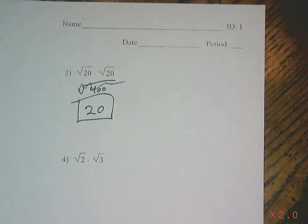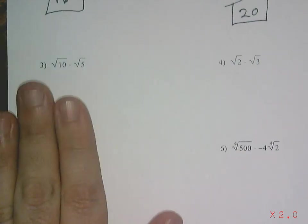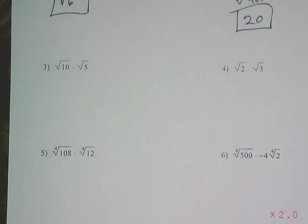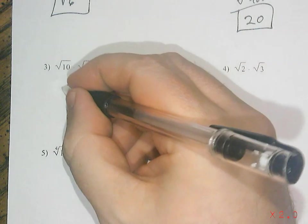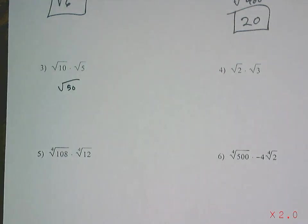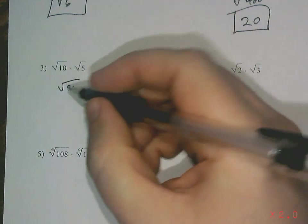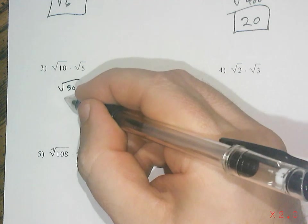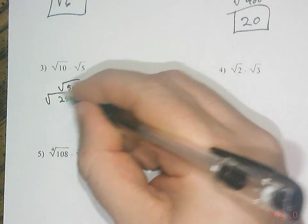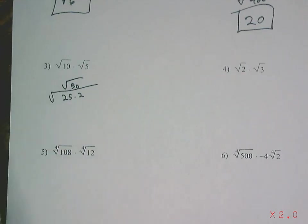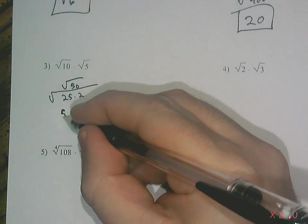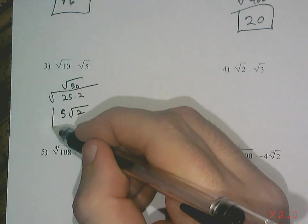What about this one? Square root of 10 times the square root of 5. Well, 10 times 5 is 50, so you've got the square root of 50. Now can I simplify that anymore? Well, 50 doesn't have a nice even square root, but 25 times 2 would equal 50, and 25 certainly does, right? So if I think of that as 25 times 2, I can take out the square root of 25, which is 5. So it'd be 5 times square root of 2 as your final answer.